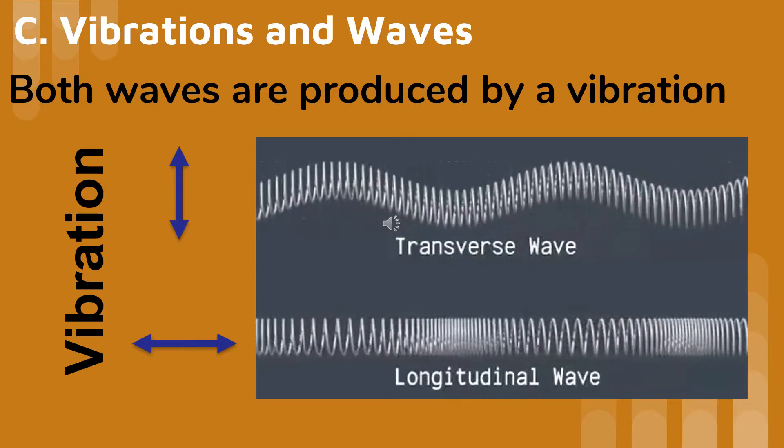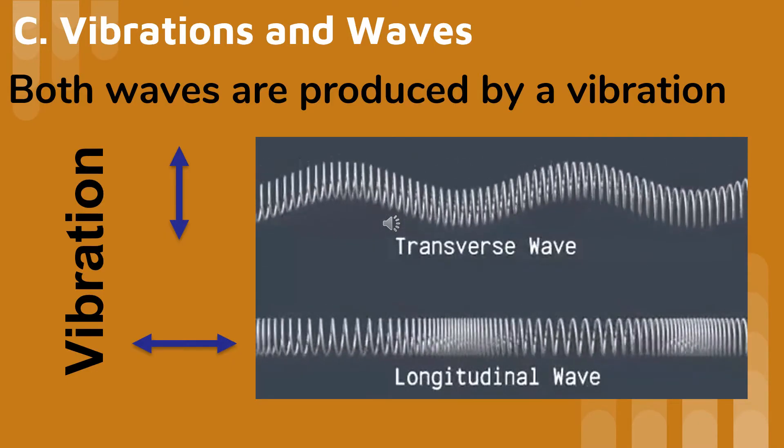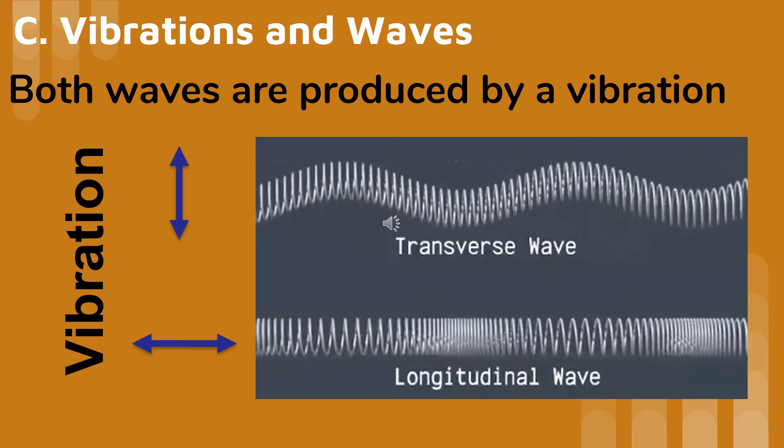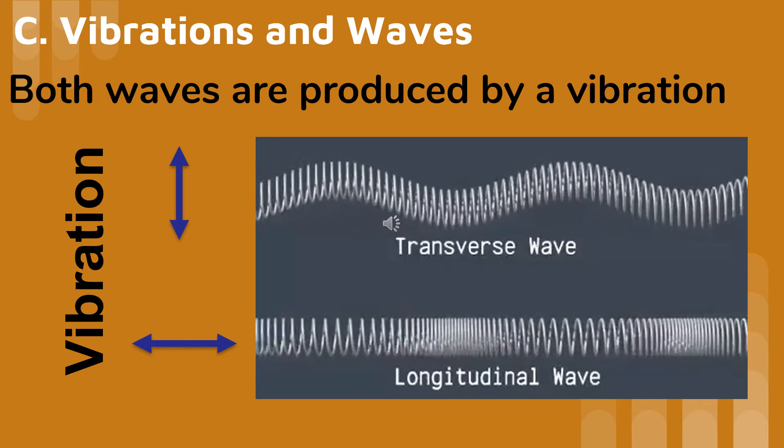Every wave begins with a vibration. If a wave is produced by a vibration that is perpendicular to the direction the wave travels, we call it a transverse wave. If the wave is produced by a vibration that is parallel to the direction that the wave travels, we call it a longitudinal wave.